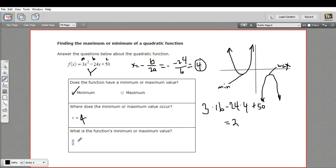So our vertex is at 4, 2, so the location of the minimum value is at x equals 4, and the actual value of the function there is 2. So that is how to find the minimum or the maximum value of a quadratic function.